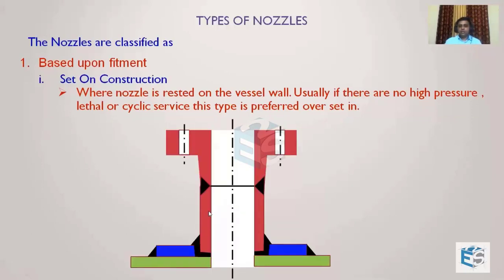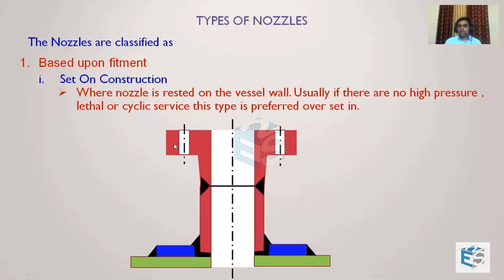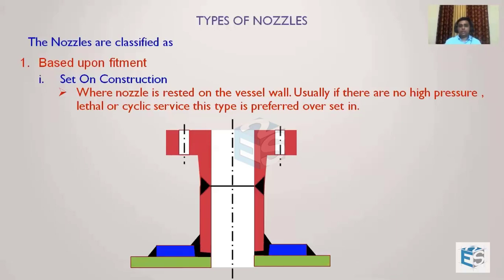Manufacturers prefer set-on construction. In set-on, the hole in the shell equals the ID of the nozzle — the nozzle is placed on top of the shell and the groove is prepared only across the nozzle. For higher-pressure applications, the beveling in the nozzle is not as critical as in the shell. Set-on is used across industries, but if the customer recommends set-in construction, it has more advantages. Set-in is also called set-through if the nozzle continues beyond the shell ID.